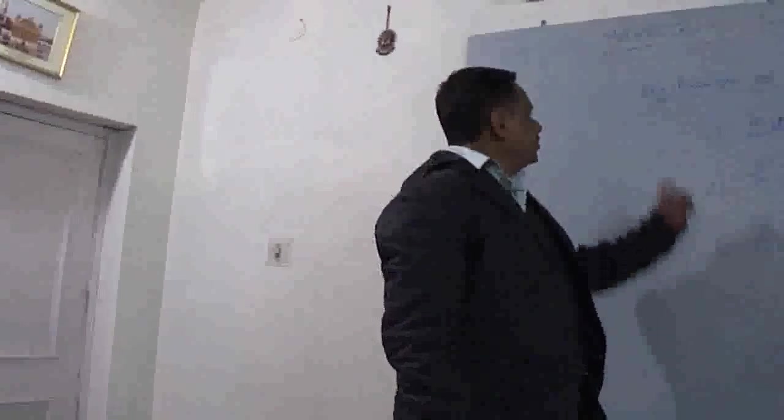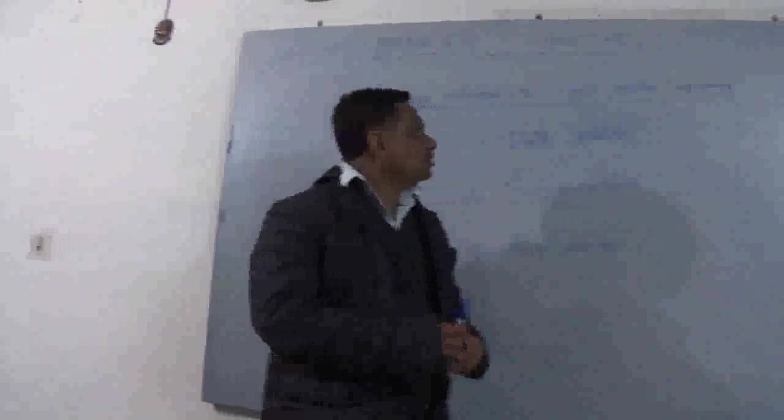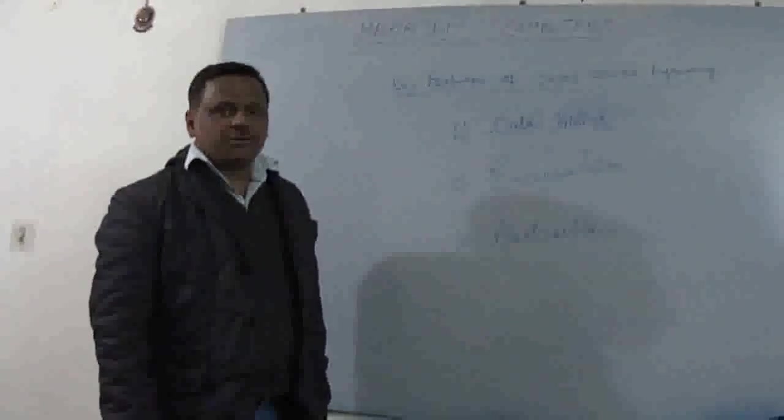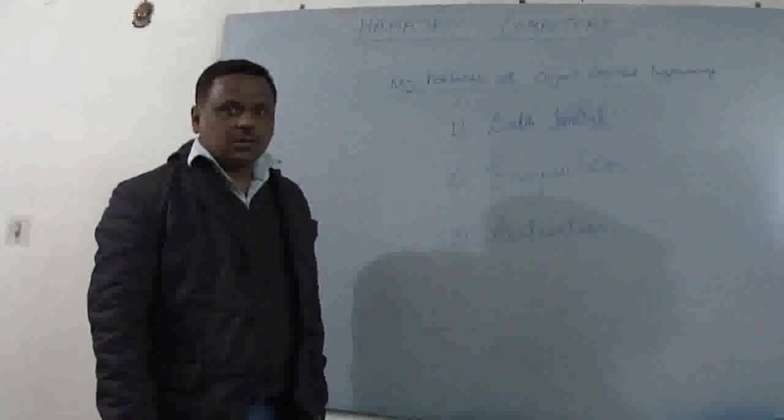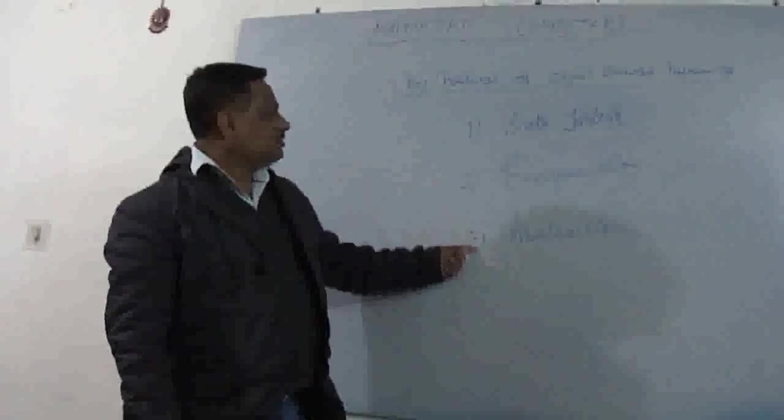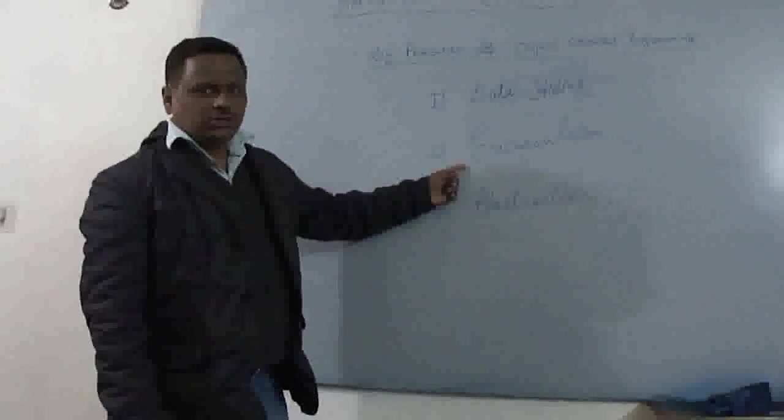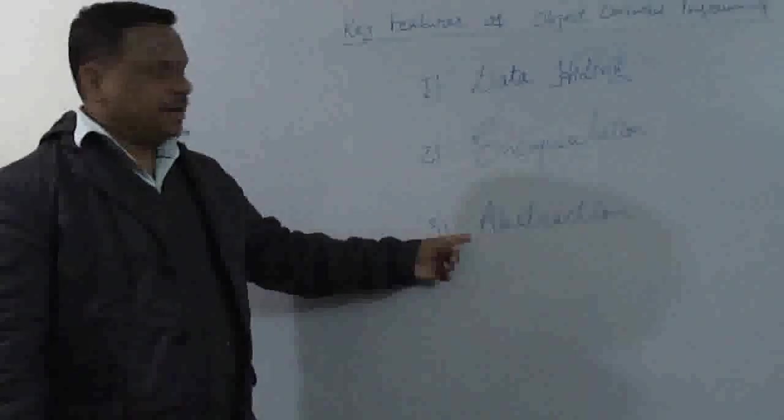Today we are going to discuss the key features of object-oriented programming. There are a lot of key features as far as object-oriented programming paradigm is concerned, but there are three main features: first one is data hiding, second one is encapsulation, and third one is abstraction.